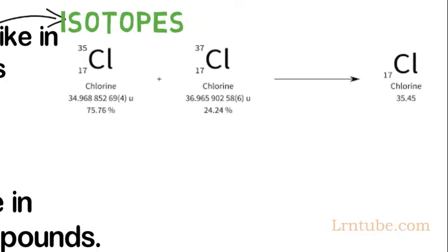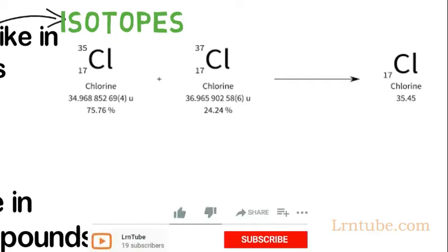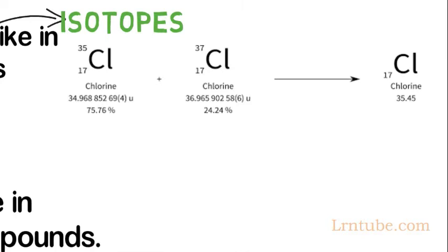For example, chlorine has isotopes 35 and 37 and both have 17 nuclear protons and 17 electrons arranged in 2-8-7 configuration. They have the same atomic number and chemical properties but the 37 isotope has two extra neutrons in the nucleus.